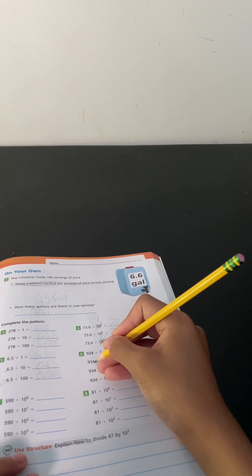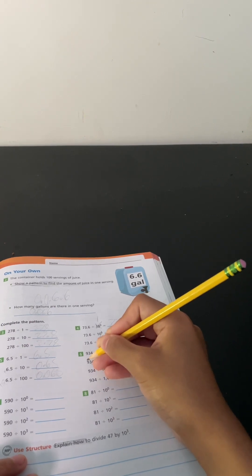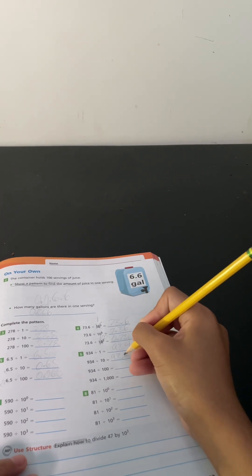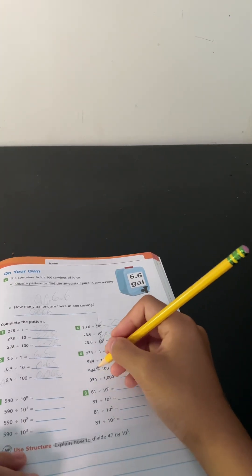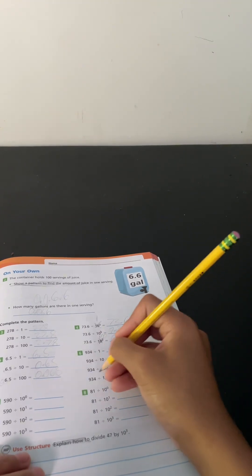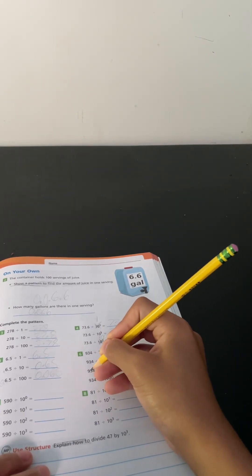9.34 divided by 10 equals 0.934. 6.5 divided by 1. 9.34 divided by 1. 7.6 divided by 1. 9.6 divided by 1.